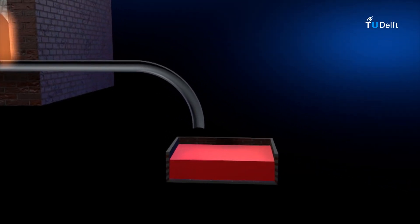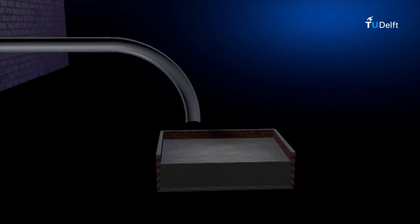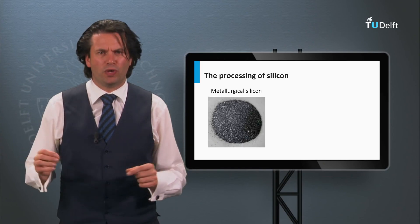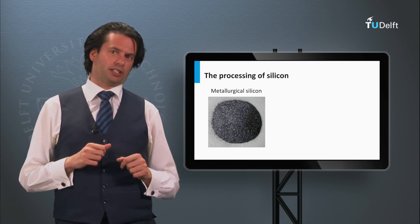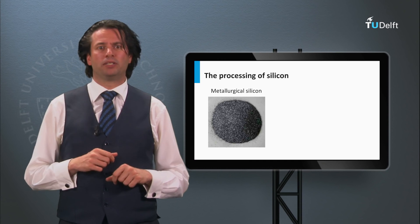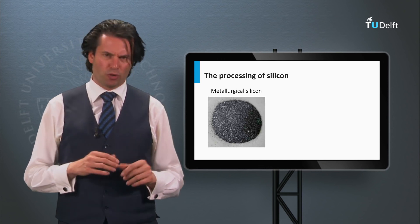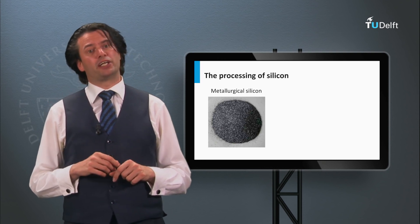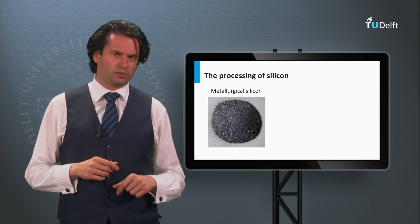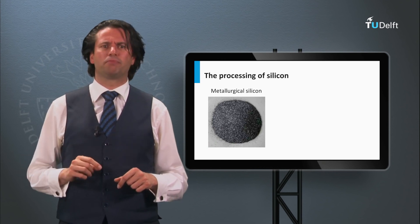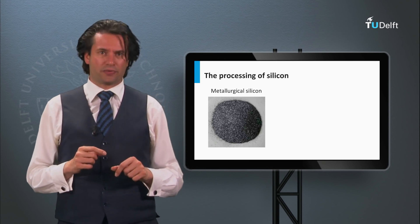The purity of metallurgical silicon is around 98 to 99%. Seventy percent of the worldwide produced metallurgical silicon is used in the aluminum casting industry to make aluminum-silicon alloy parts used in automotive engine blocks. The other 30% is used to make chemical products like silicones. Only around 1% of metallurgical silicon is used to make electronic grade silicon.